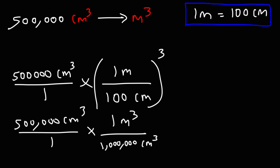So now we can cancel the unit cubic centimeters. So it's 500,000 divided by a million, which is 0.5 cubic meters. So that's how we can convert from cubic centimeters to cubic meters.